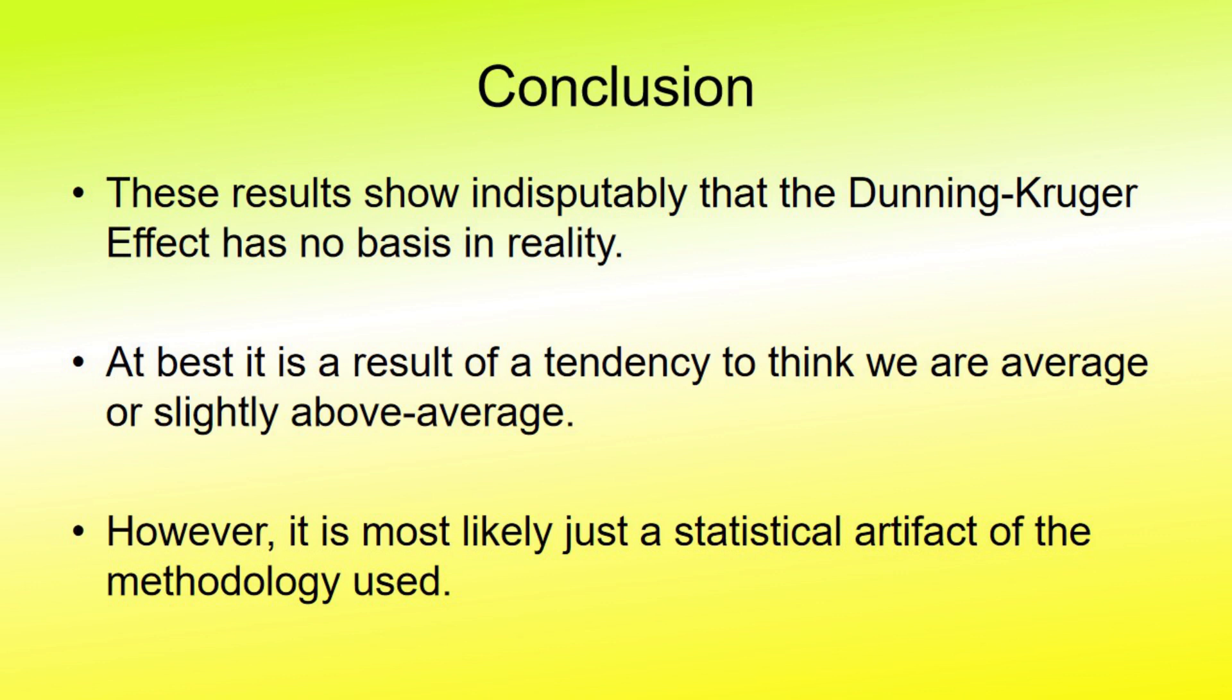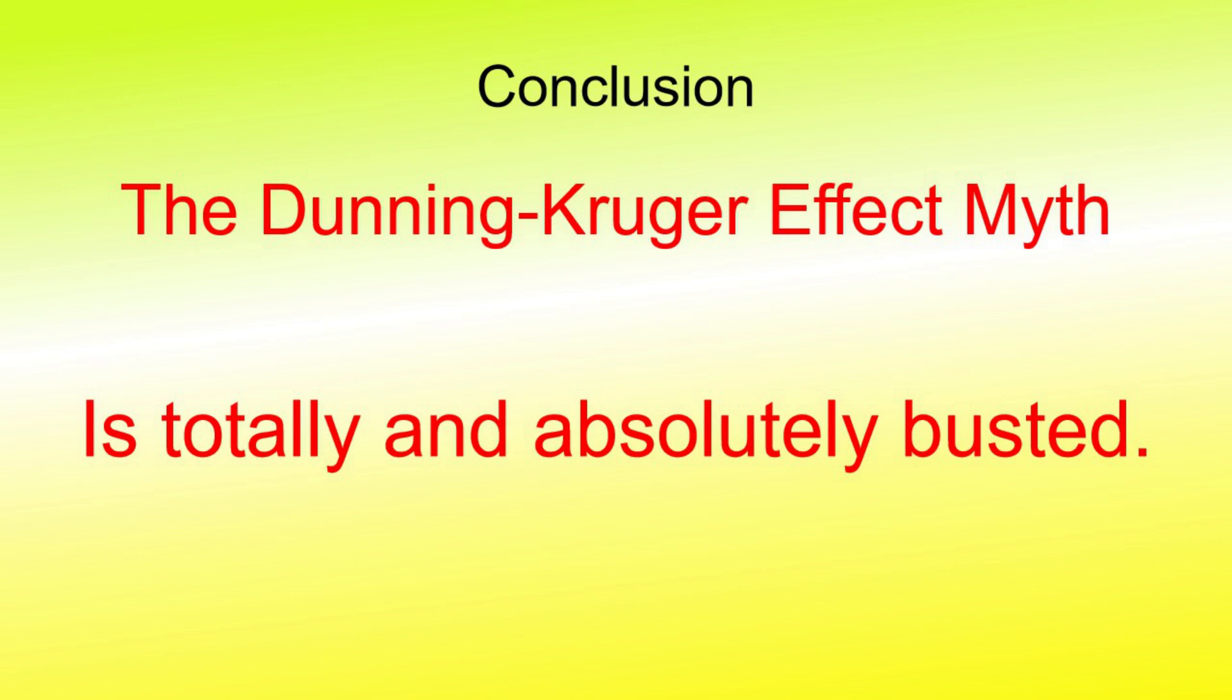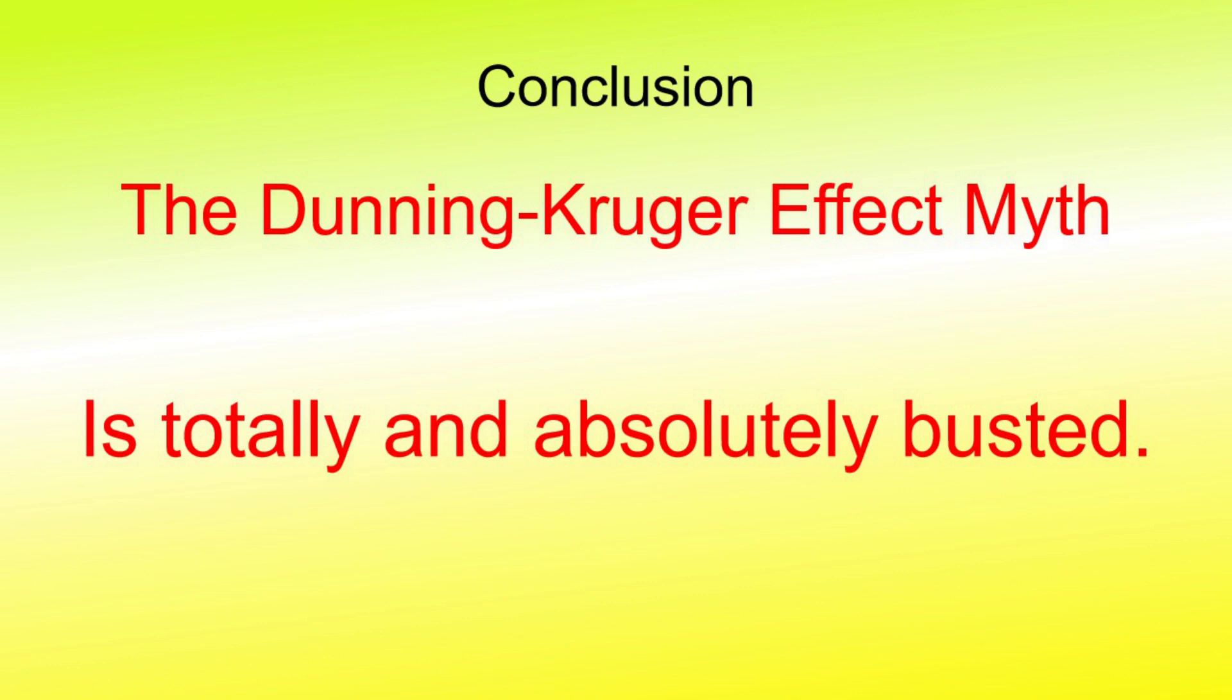These results show indisputably that the Dunning-Kruger effect has no basis in reality. At best, it is a result of a tendency to think we are average or slightly above average. However, it is most likely just a statistical artifact of the methodology used. In conclusion, the Dunning-Kruger effect myth is 100% totally and absolutely busted.